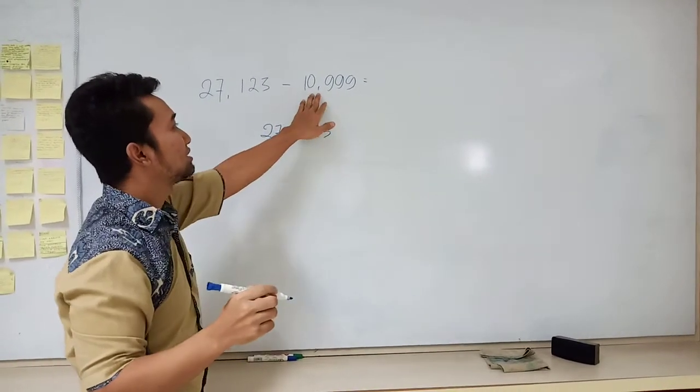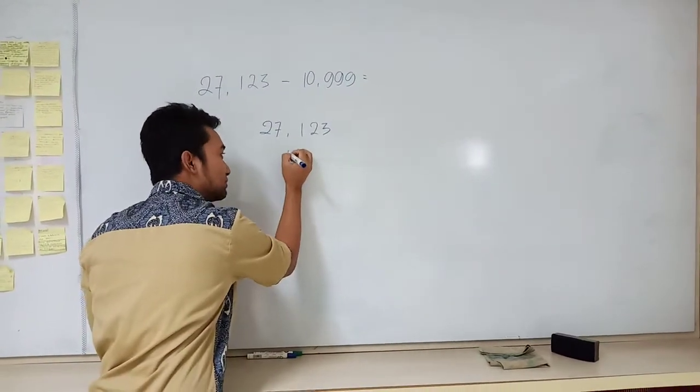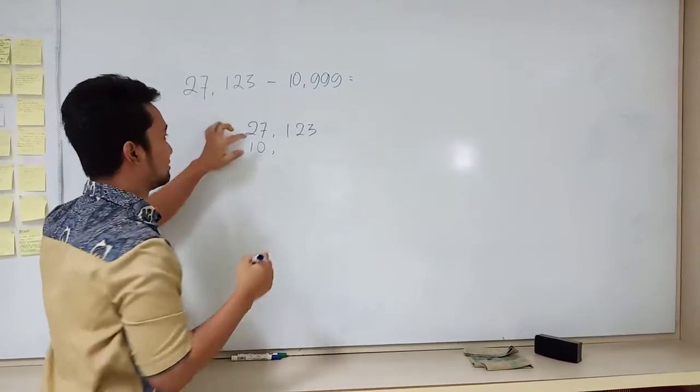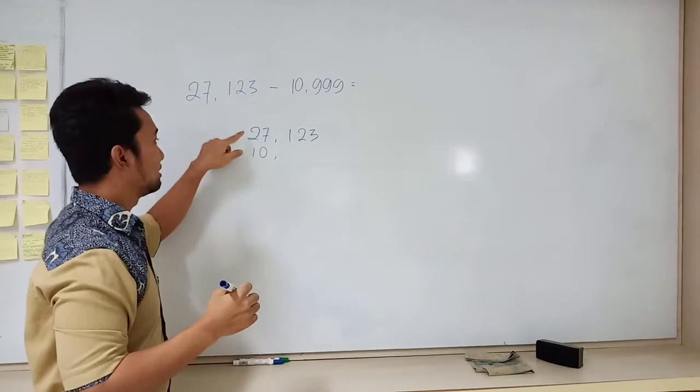And then because this is the comma here, you can put the comma first maybe to make it easier. And then put 10 here, 1 with 1, 10 with 10.